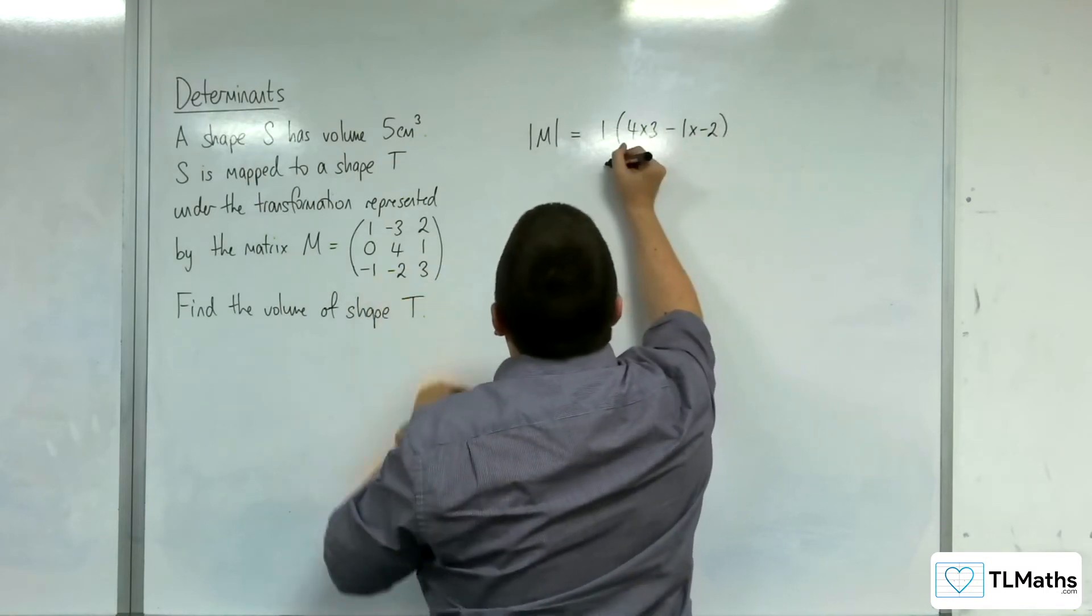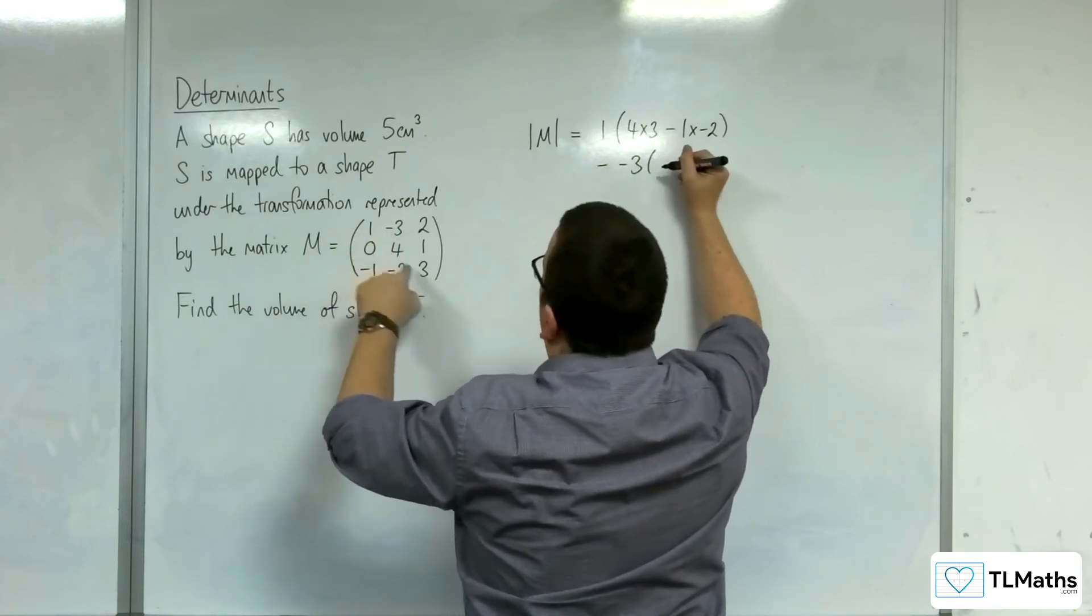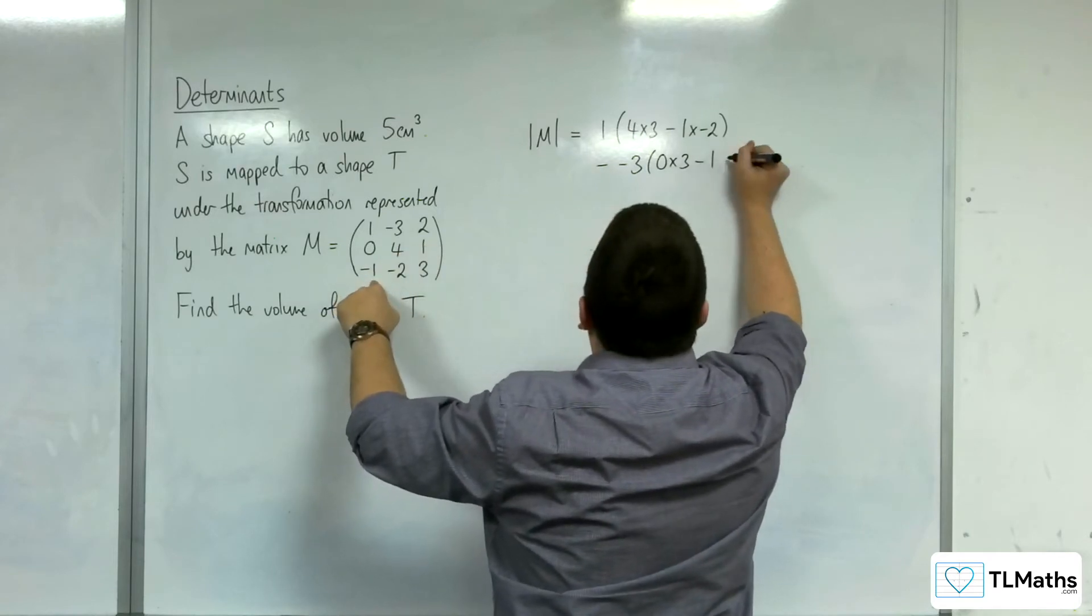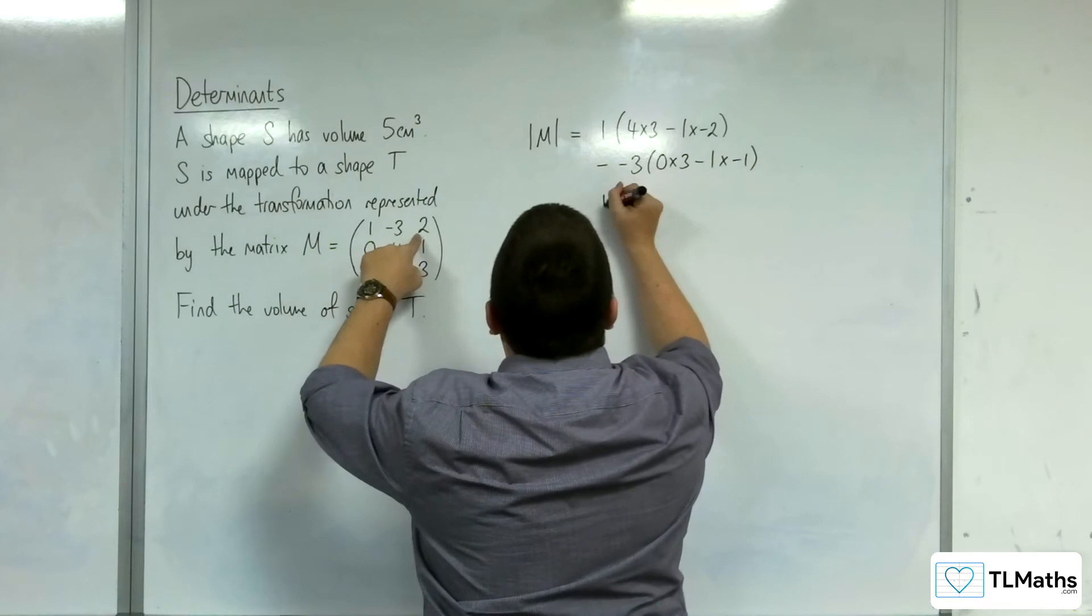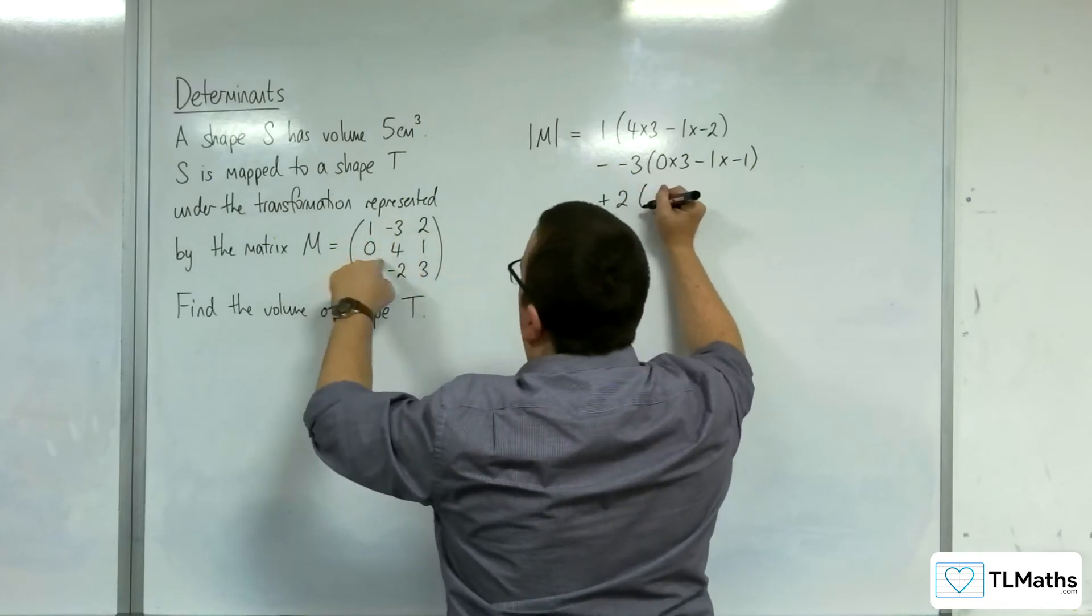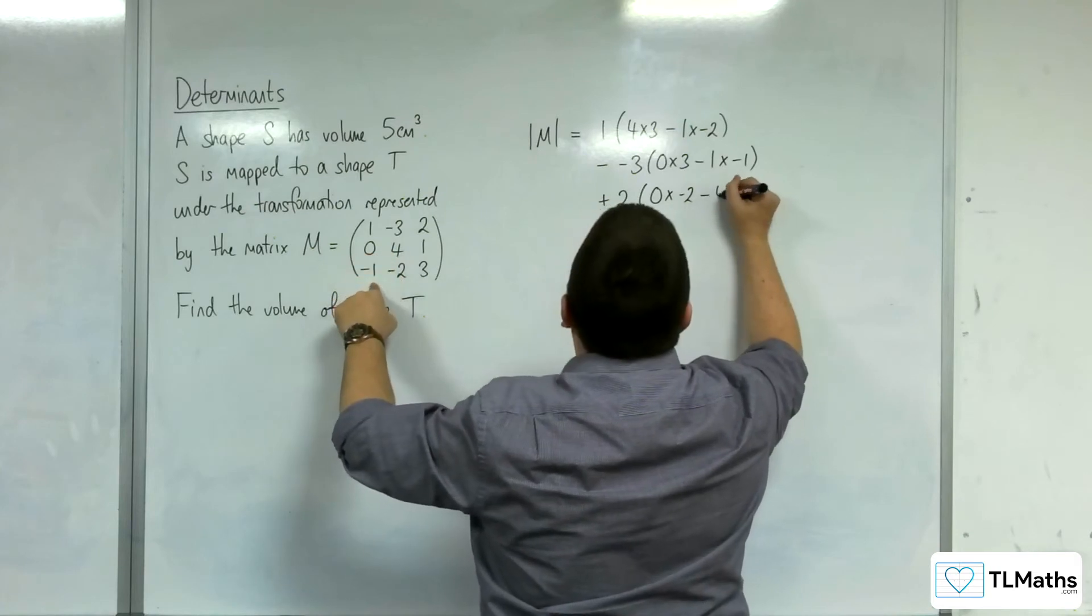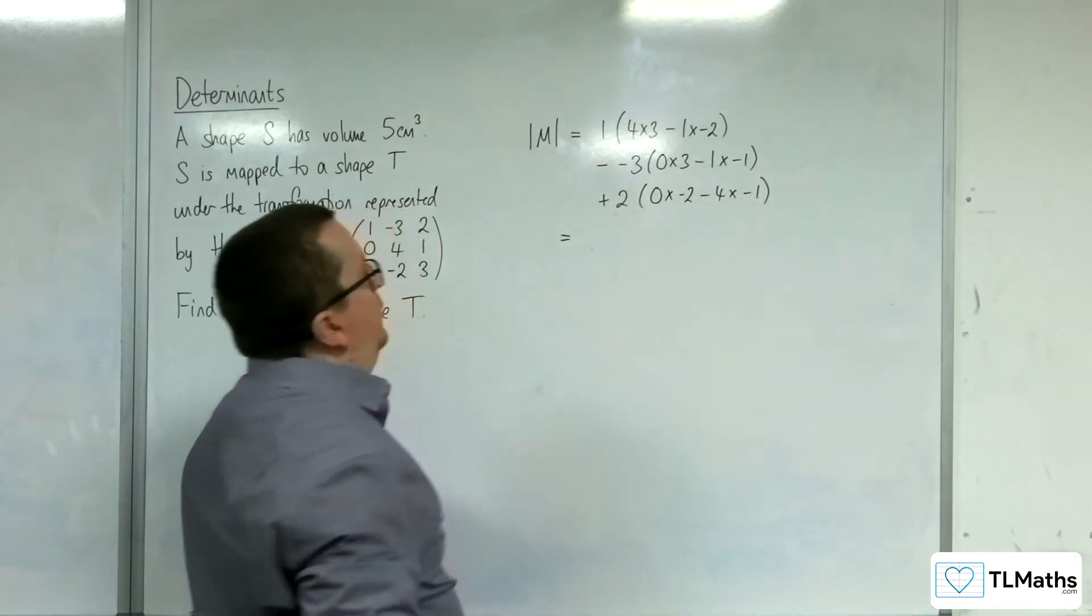Then take away negative 3, lots of 0 times 3, take away 1 times minus 1. And then plus 2, lots of 0 times minus 2, take away 4 lots of minus 1. Lots of negatives in there.